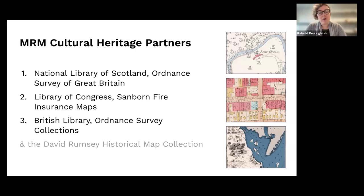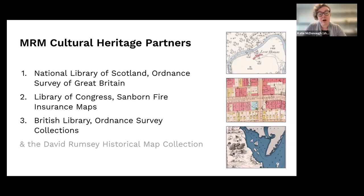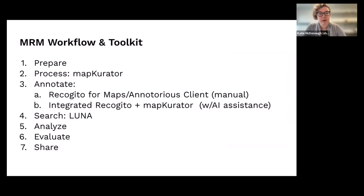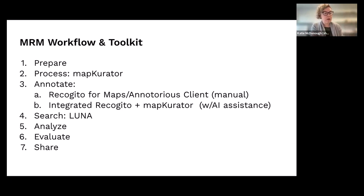We were also meant to work with the Ordnance Survey collections at the British Library, which are increasingly being digitized in small batches and are a crucial source of potential information about Ordnance Survey. And then we had this wonderful opportunity to collaborate with the David Rumsey Historical Map Collection, affiliated with the Rumsey Map Center at Stanford Libraries. David Rumsey kindly funded an additional project on top of the grant, making it possible for us to process about half of his collection using tools from Machines Reading Maps.